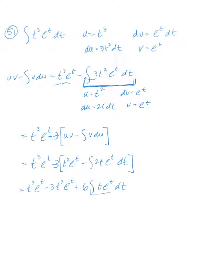Now I'm going to have to do by-parts again on this last integral. I'm going to let u be t and dv be e to the t. So du equals dt, and v equals e to the t.